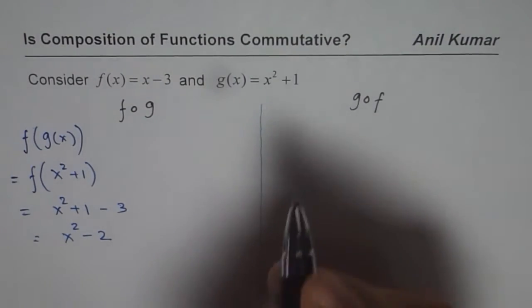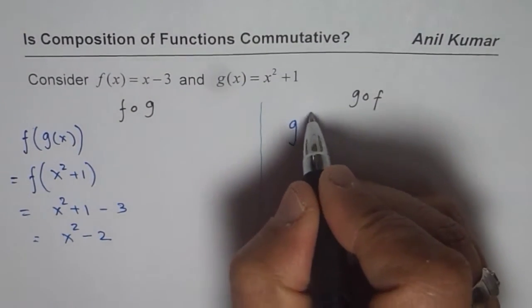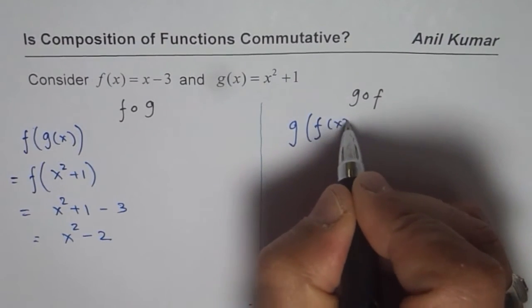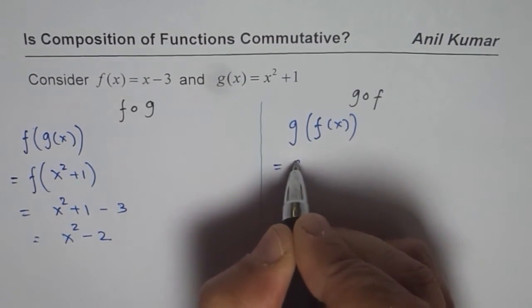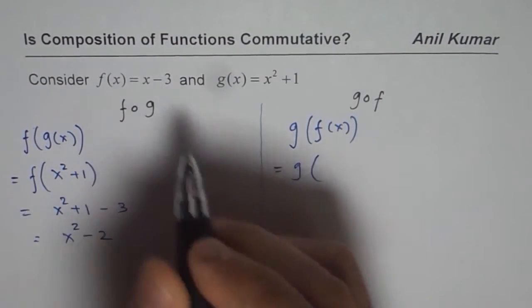Now let us calculate what is g of f. So g of f will be g(f(x)). That is equal to g of, f(x) is x minus 3.